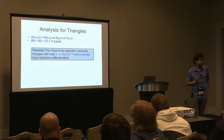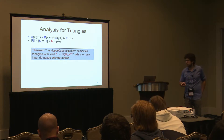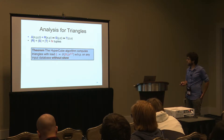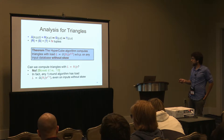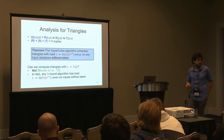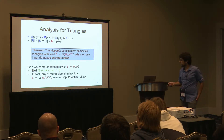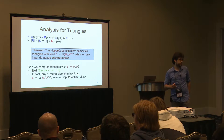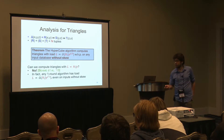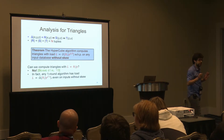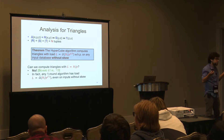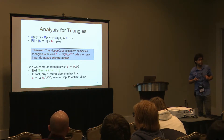In the hypercube algorithm for triangles: R tuples are sent to all servers in a random vertical column, S tuples to servers in another direction, and T tuples in the third direction. Any triangle A,B,C will appear at the intersection of the corresponding hyperplanes. The load is N/p^(2/3). This is optimal — no one-round algorithm can do better. The algorithm assumes no skew in the data.